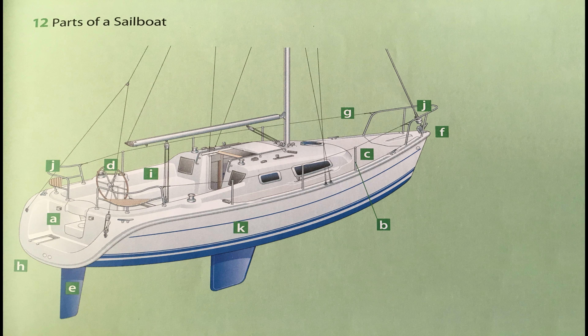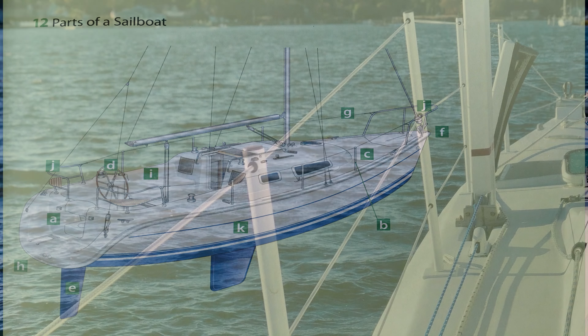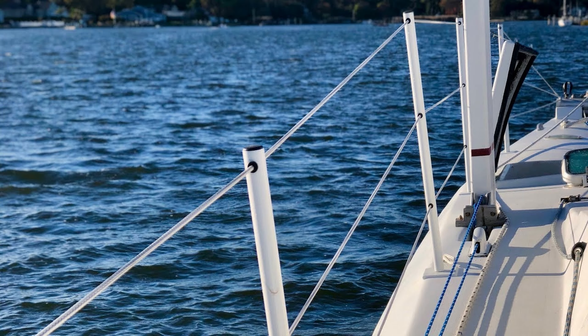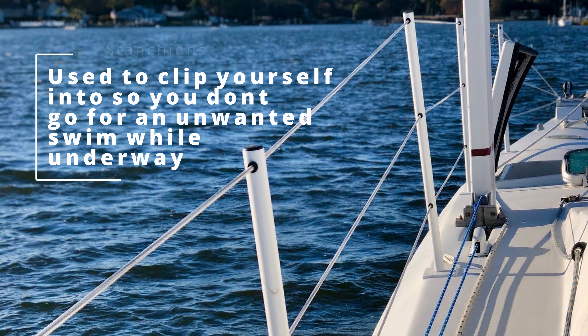Name the part of the sailboat labeled B. Stanchions. They're vertical poles located around the perimeter of a sailboat and are used for installing lifelines around the boat's deck to keep people safe.